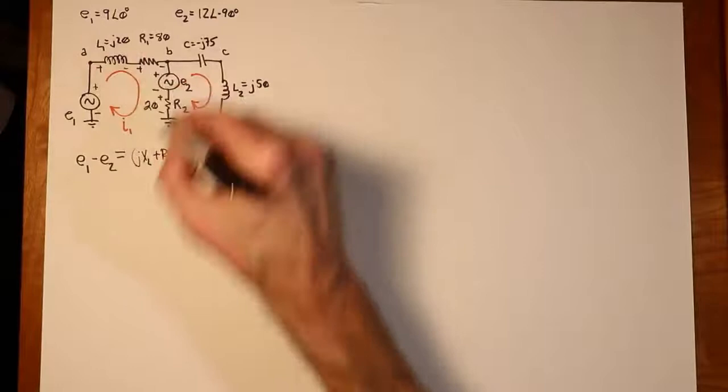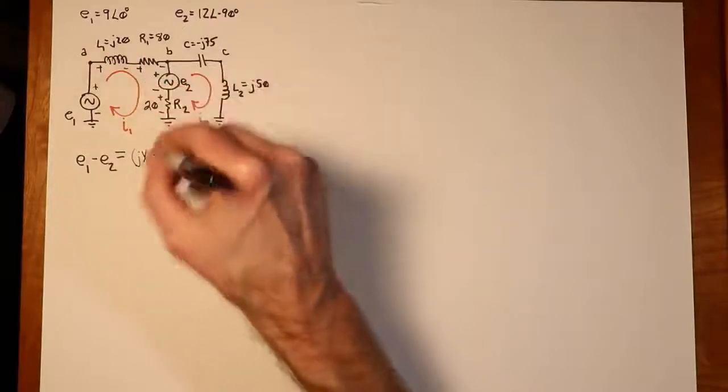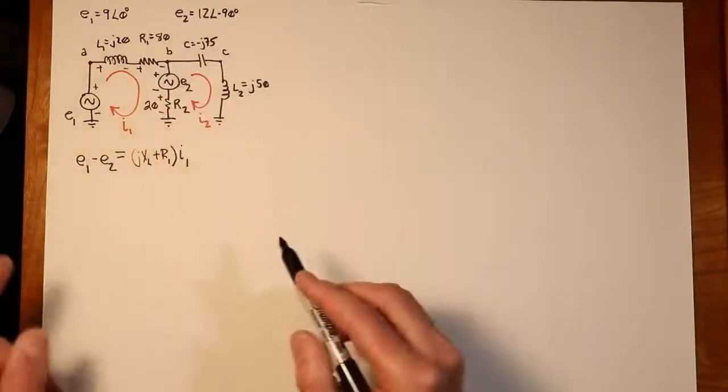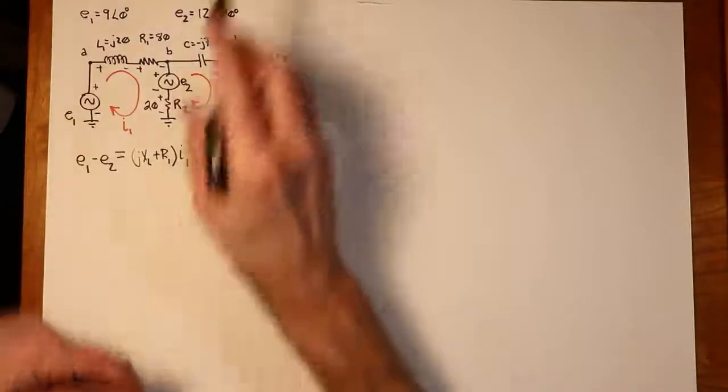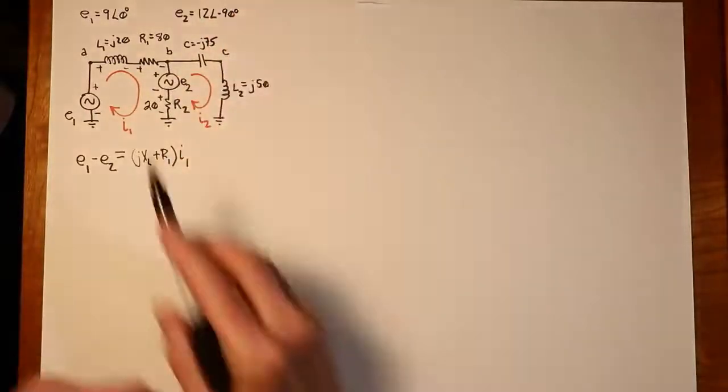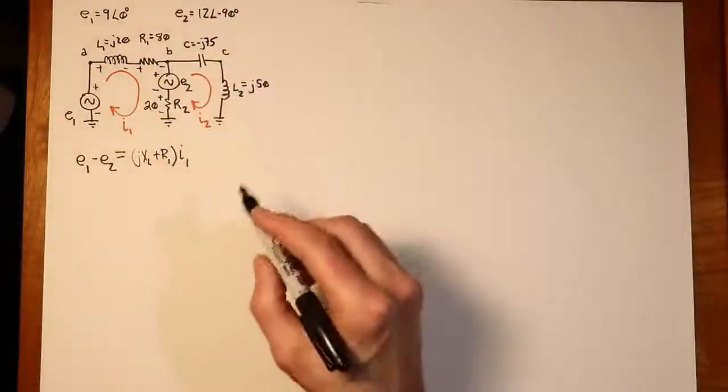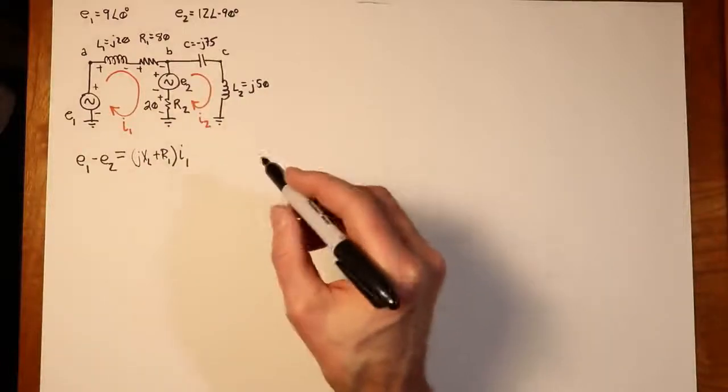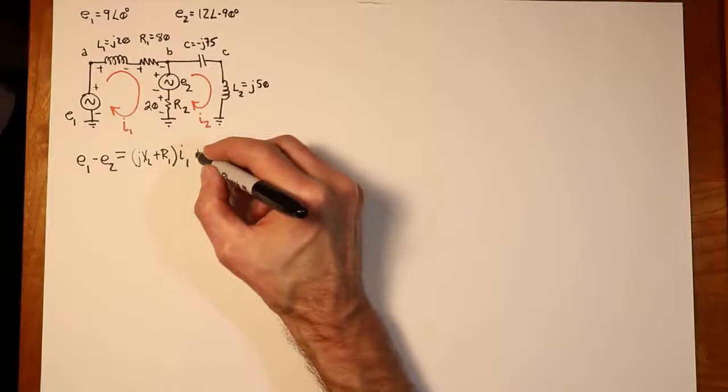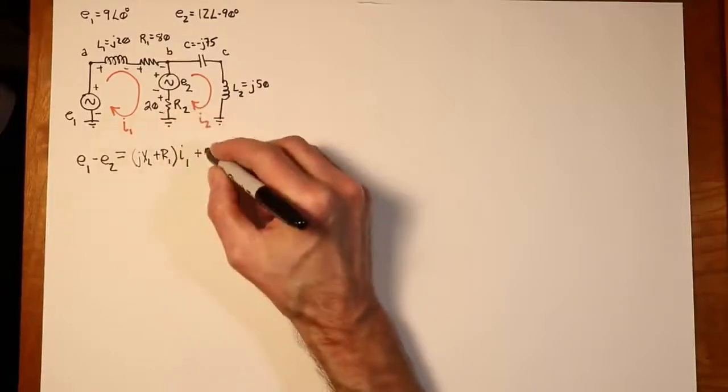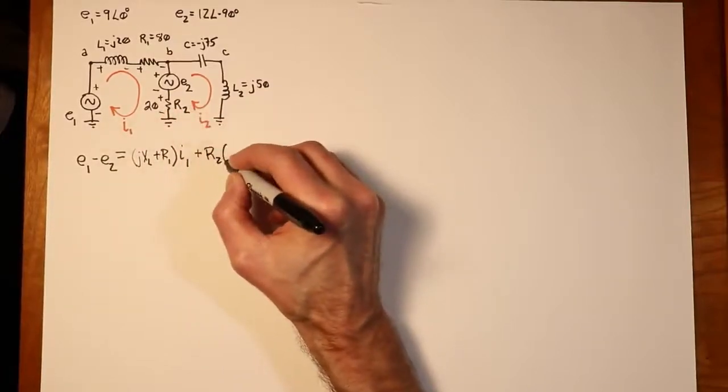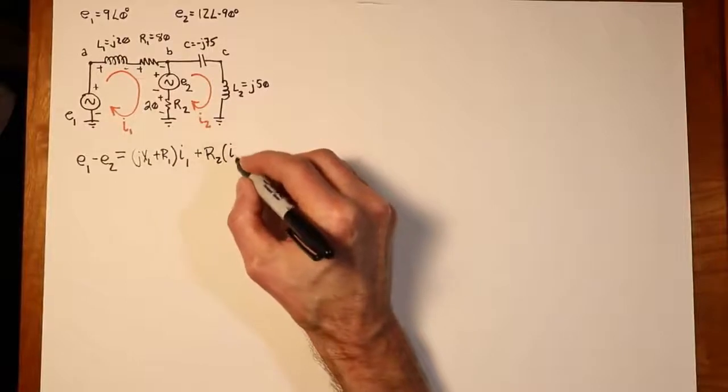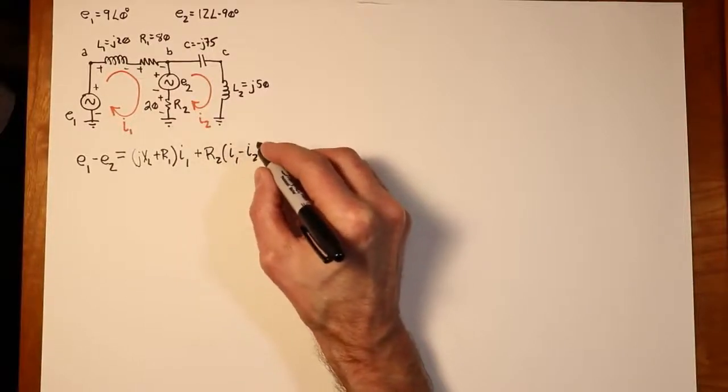And then we have this R2 element, but that has two currents going through it. I1 is coming down. I2 is going up. So those are meshing currents. They're fighting currents. In other words, there's a differential current that's flowing through there. So we will add on R2 times that differential current, I1 minus I2.